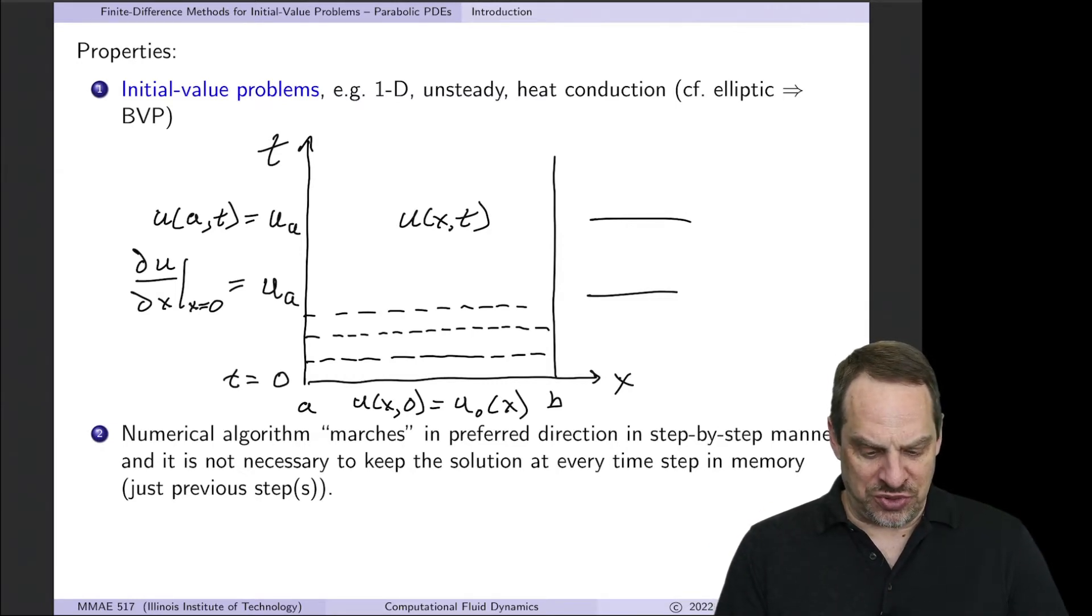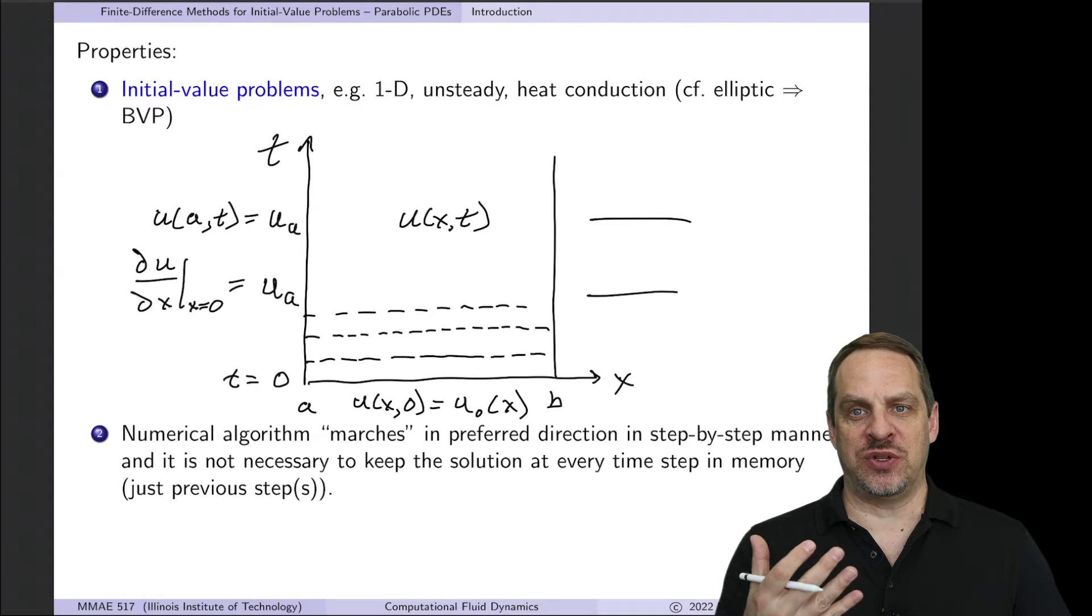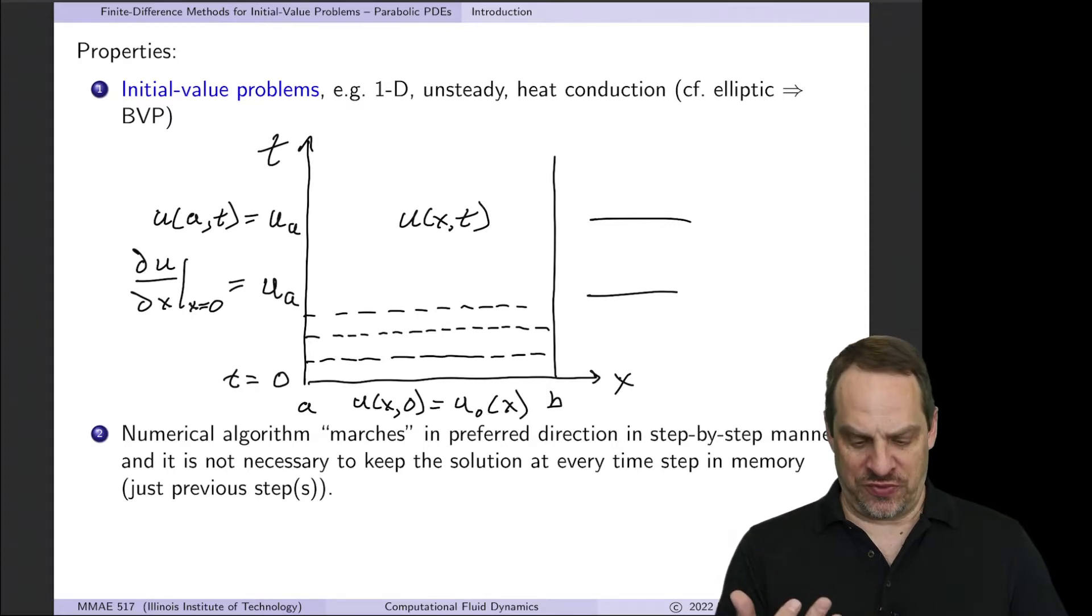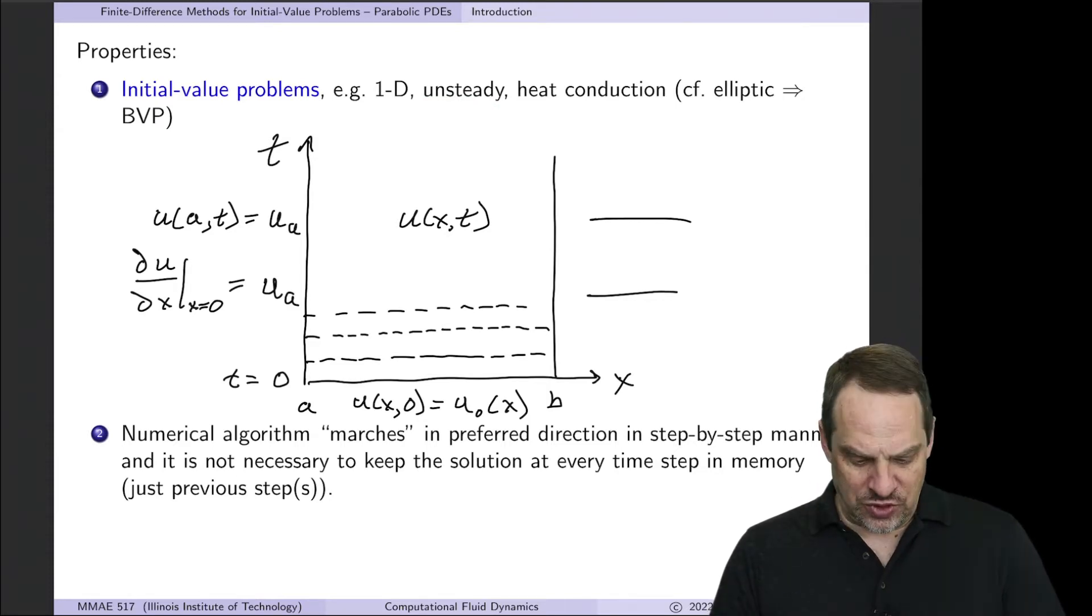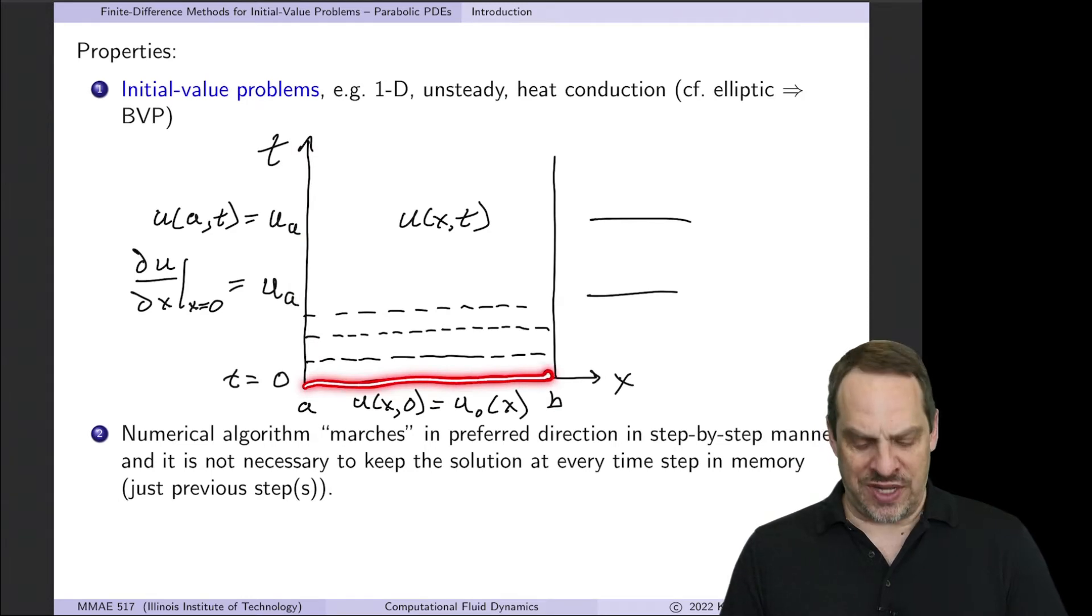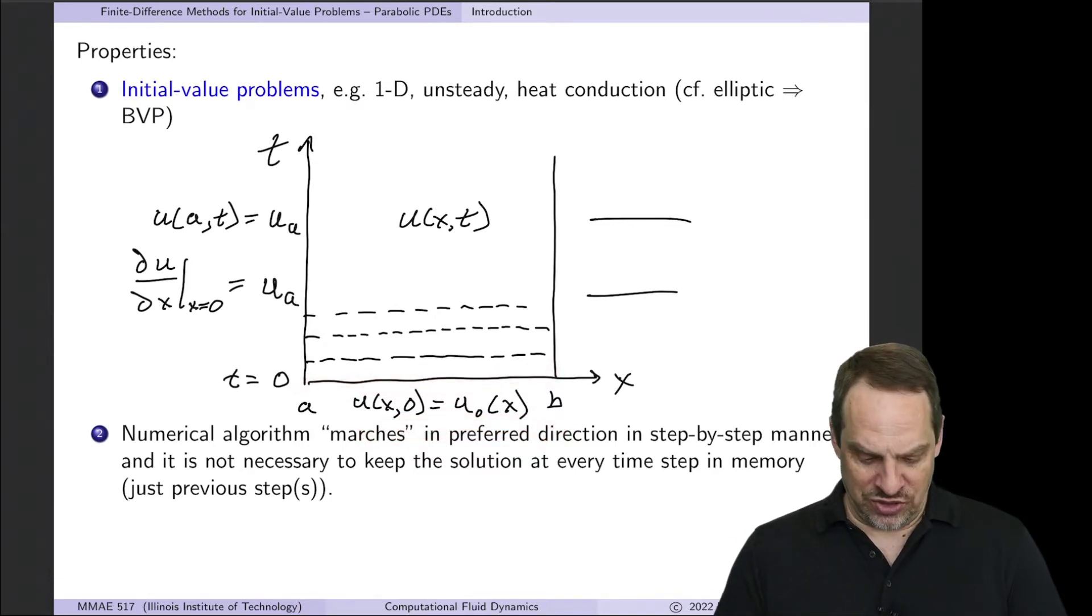So we could think, for example, in terms of the 1D unsteady heat conduction equation. Remember for two-dimensional steady heat conduction, it's governed by Laplace's equation, which is an elliptic partial differential equation. So here, because it's unsteady, it's going to be parabolic proceeding in time. So if it's one-dimensional, we just have one spatial dimension x, and then time will be up. So we have t is equal to zero along the x-axis. We have some initial condition, which is why it's called an initial value problem. We need the values of the solution at the initial condition.